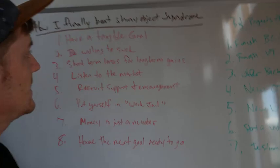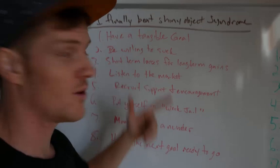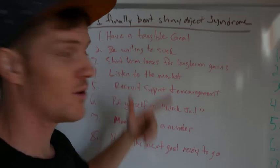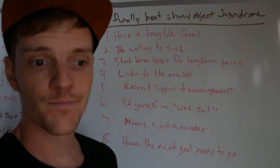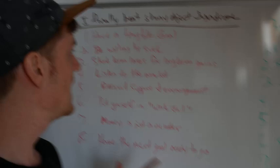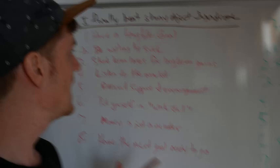How I finally beat shiny object syndrome — number one: have a tangible goal. We have to think about this for a second. When we're talking about business, making monetary results, making an impact, or helping somebody with a certain kind of problem, those are very abstract things that we want to go after. We may have a very strong vision of that in our mind, but it's still so abstract. We need to turn that goal into a tangible goal.